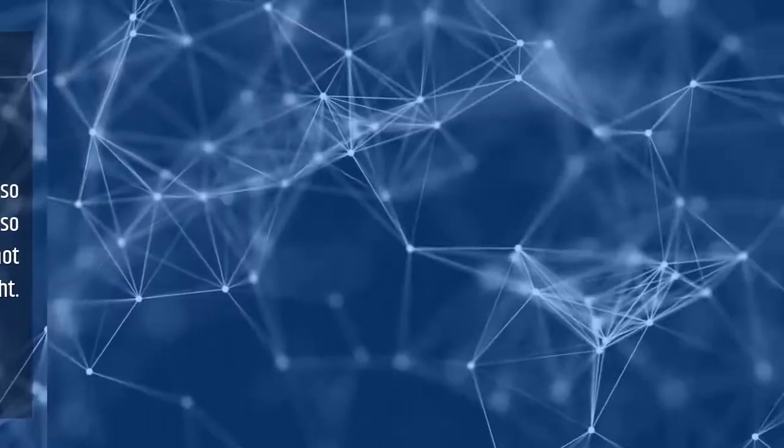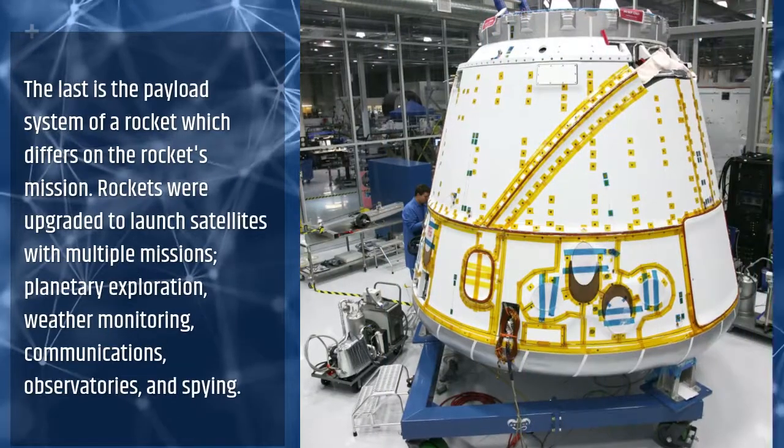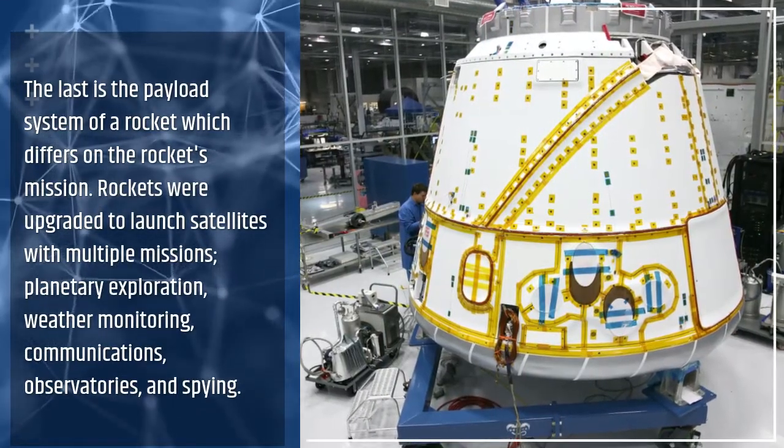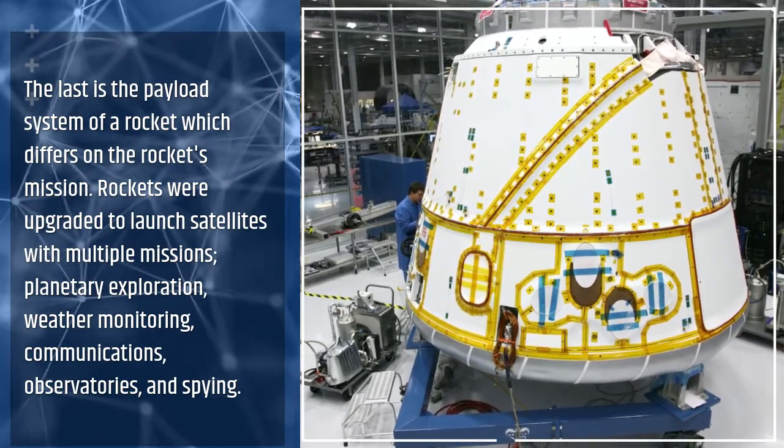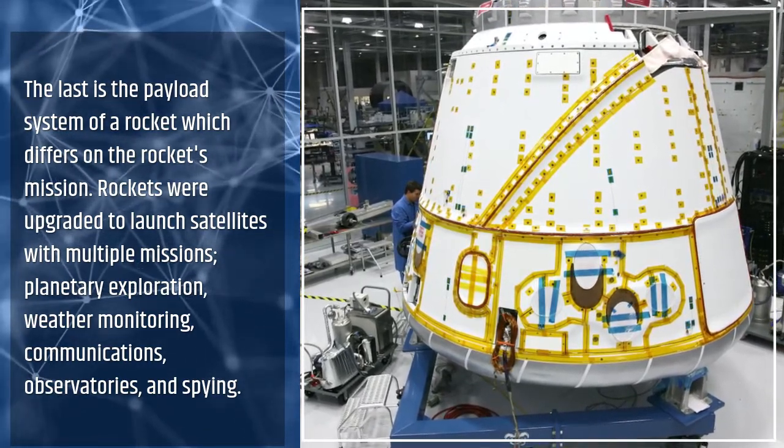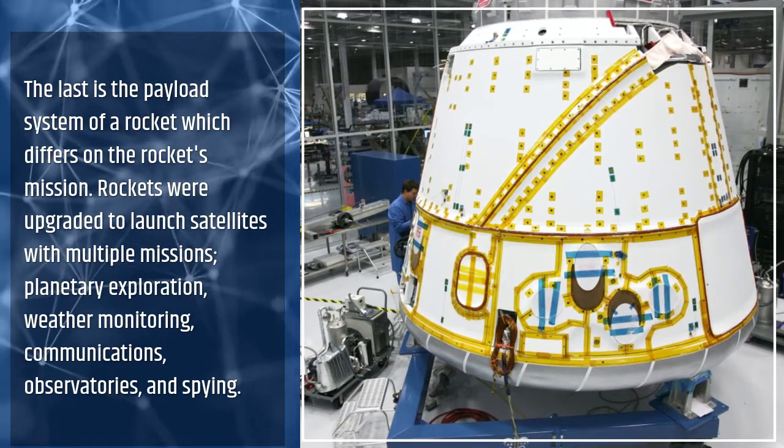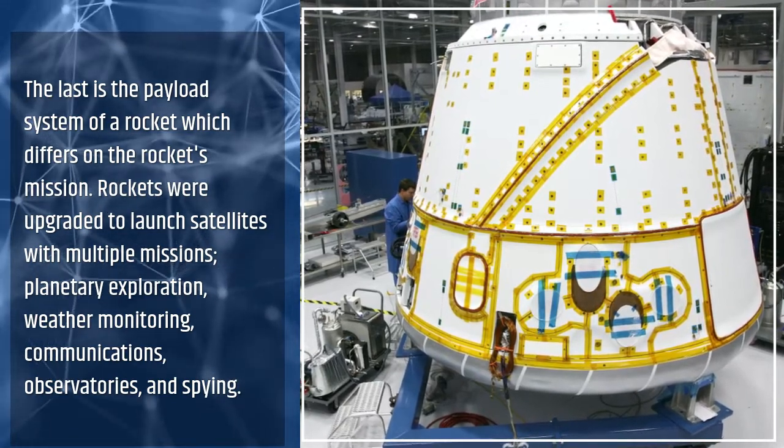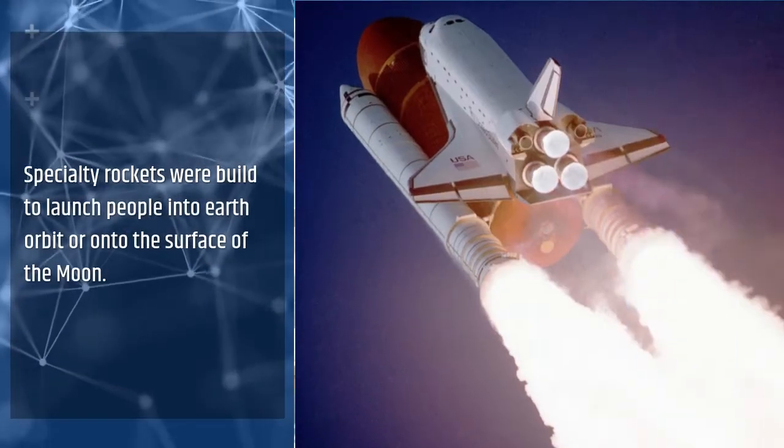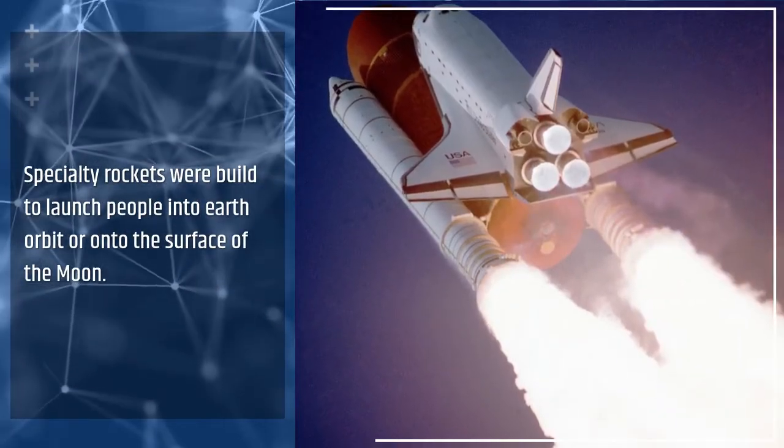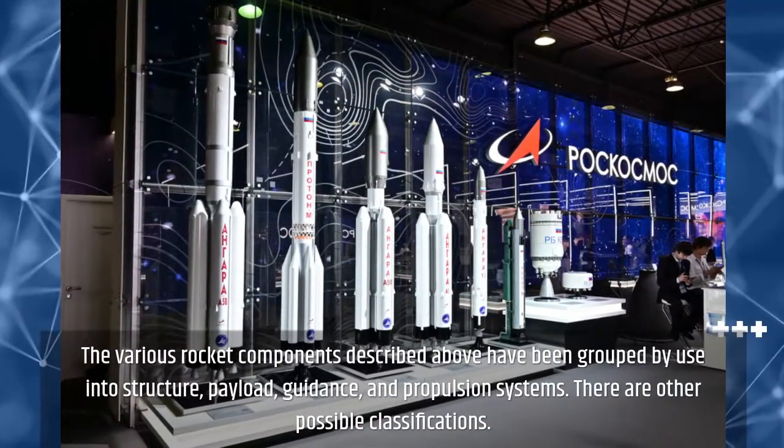The last is the payload system, which differs based on the rocket's mission. Rockets were upgraded to launch satellites with multiple missions: planetary exploration, weather monitoring, communications, observatories, and spy satellites. Specialty rockets were built to launch people into Earth orbit or onto the surface of the moon.